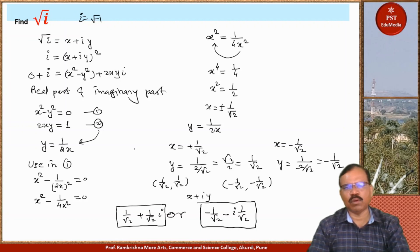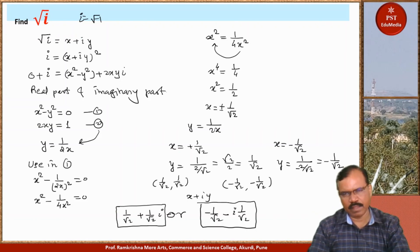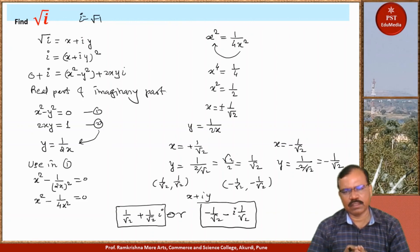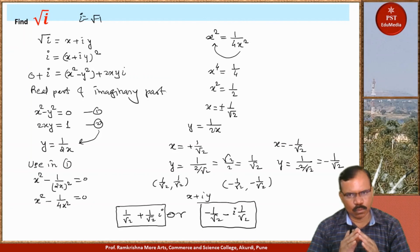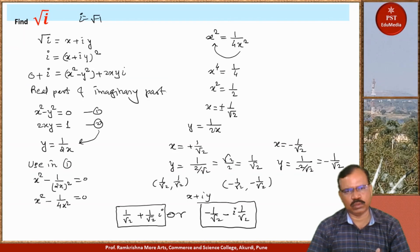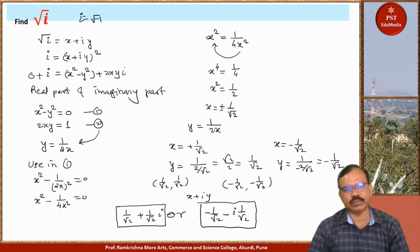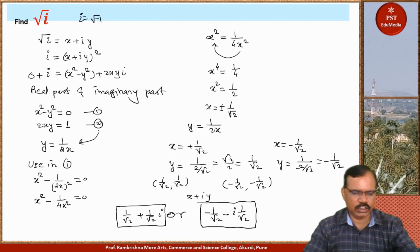So this is about square roots of complex numbers using the simple algebraic method. In the next lecture I will discuss finding cube roots, fourth roots, fifth roots, and square roots using De Moivre's theorem. Thanks very much for watching this lecture.